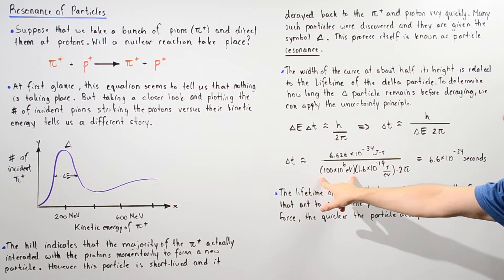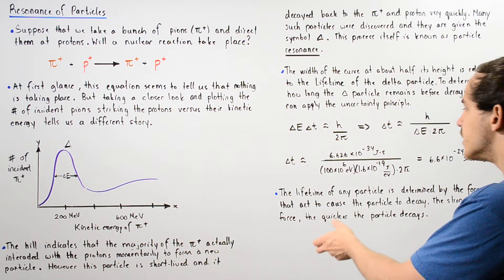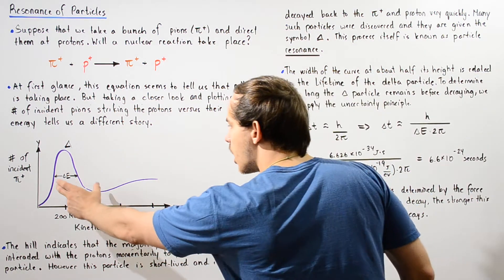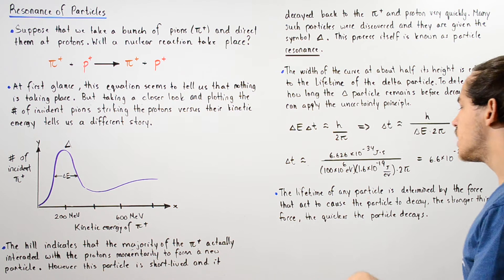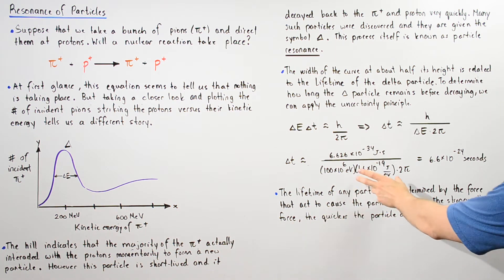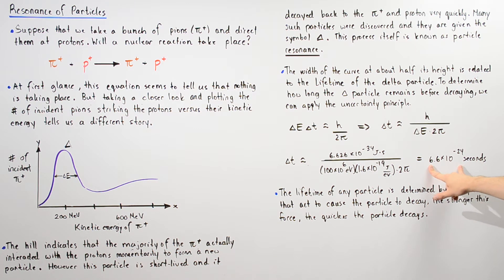We can plug in our h constant, our energy of 100 mega electron volts. So we have to convert to joules, so we multiply the 100 mega electron volts by 10 to the 6, and then multiply that by 1.6 times 10 to the negative 19. And we get the following quantity: 6.6 times 10 to the negative 24 seconds.